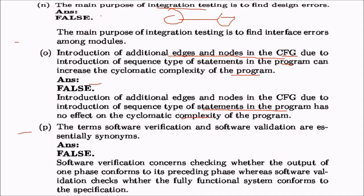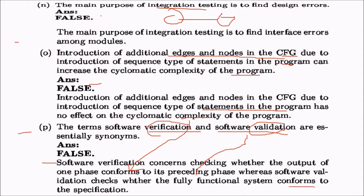Statement p: software verification and software validation are synonyms. No — they are entirely different. Verification is whether you are making the product right; it checks whether the output of one phase conforms to the preceding phase. Validation is whether you are making the right product; it checks that the fully functional system conforms to the SRS specification provided by the user.